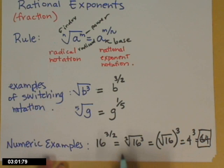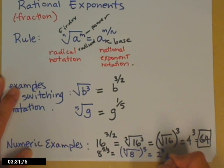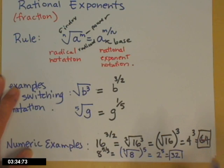One more numeric example, I think I can squeeze it in. Eight to the five-thirds. If I rewrite that with a radical, eight, I need to raise that to the fifth power, and I need to take the cubed root. I'll do the cubed root first, and then raise that to the fifth power. The cubed root of eight is two. Two to the fifth is 32.